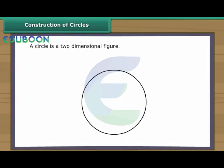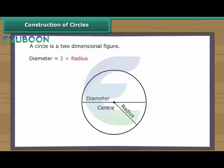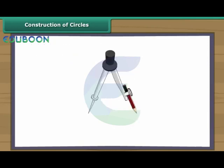Construction of Circles. A circle is a two-dimensional figure. Every circle has a centre. The distance between the centre and the boundary of a circle is known as its radius. The line segment through the centre of a circle with its end points touching the boundary is known as the diameter. The diameter of a circle is twice its radius. We draw circles with the help of a compass.